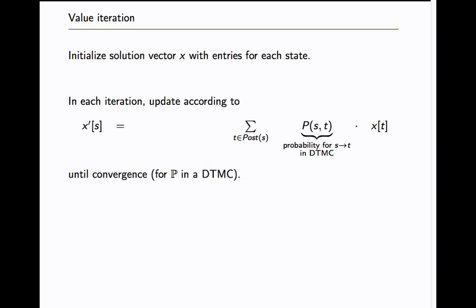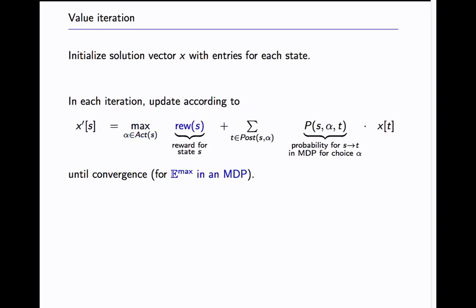This is done by taking a vector of values for each state and then initializing it appropriately and then iteratively updating the values according to a fixed point operator. For probabilities and DTMCs you want to compute the next value for some state, you look at the states that are reachable from this state and look at the values and multiply it with the transition probabilities and you get a new updated value. For MDPs you have to additionally do the quantification over the non-deterministic choices and for rewards you have to take them into account as well.